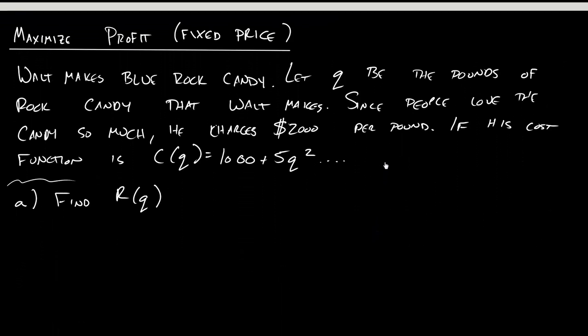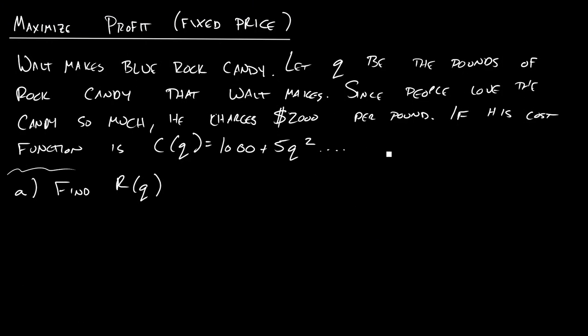So let's start with this simpler example. Doesn't mean it's going to be easy on the first try. But Walt makes blue rock candy. And Q is going to be the pounds of candy that he makes. And since people love it so much, he gets to charge $2,000 per pound. So his cost function is 1,000 plus 5Q squared. So that 1,000 would be his fixed costs.